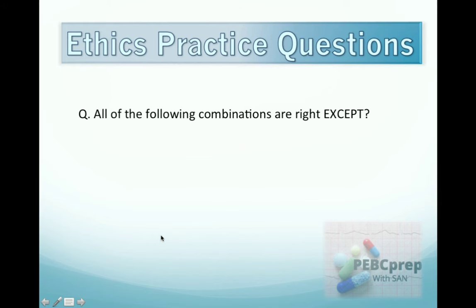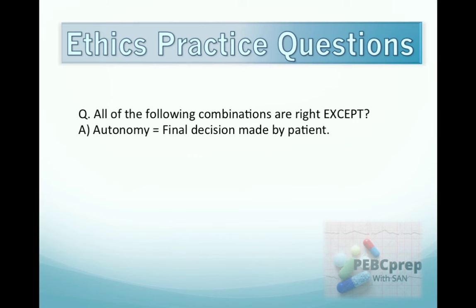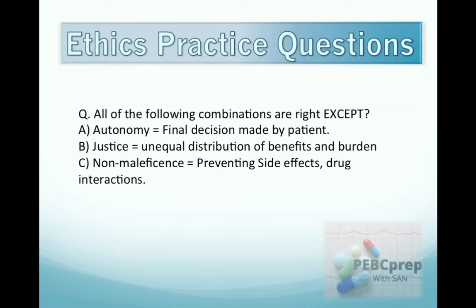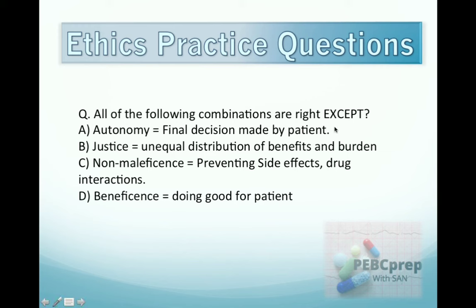Next example: all of the following combinations are right EXCEPT. A: autonomy — final decision made by patient. B: justice — unequal distribution of benefits and burden. C: non-maleficence — preventing side effects and drug interactions. D: beneficence — doing good for the patient. Always give special attention to the word 'except.' The answer is B.